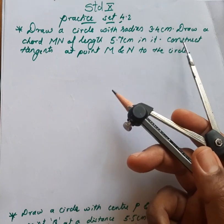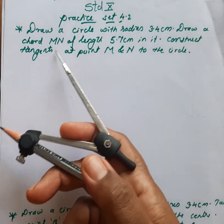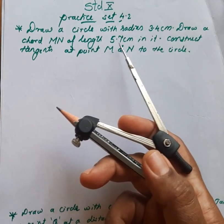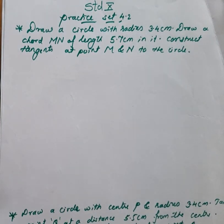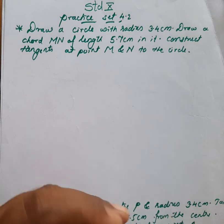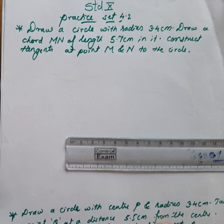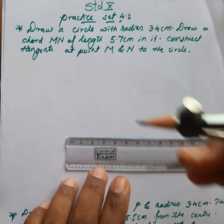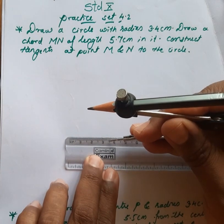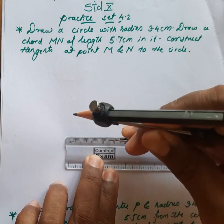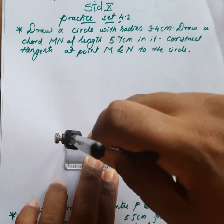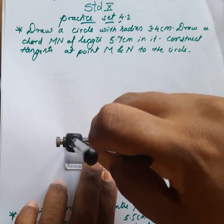I will read the question: draw a circle of radius 3.4 centimeters and draw chord MN of length 5.7 centimeters in it, and construct the tangent at points M and N. Now I will draw the circle with radius 3.4 centimeters.